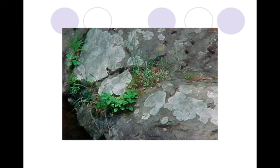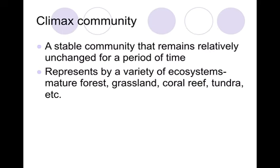Here's another example of primary succession. A climax community is a community that is stable — it stays relatively the same or unchanged over a period of time. It represents a variety of different ecosystems. Usually we have mature forests or grassland, coral reefs, tundra, etc. So this is a community that has reached its kind of maximum maturity.